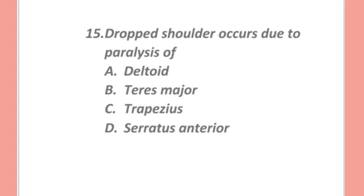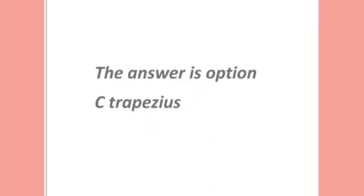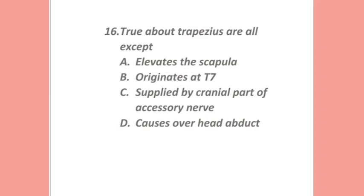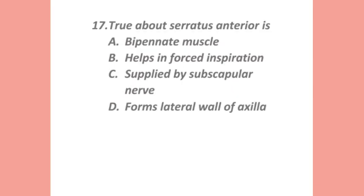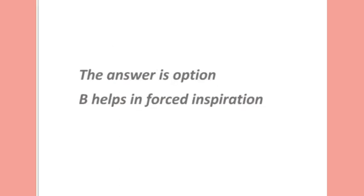The muscle causing supination of the forearm is: anconeus, brachioradialis, biceps, or FDS? The answer is option C — biceps. Dropped shoulder occurs due to paralysis of: deltoid, teres major, trapezius, or serratus anterior? The answer is option C — trapezius. True about trapezius — all except: elevates the scapula, originates at T7, supplied by cranial part of accessory nerve, or causes overhead abduction? The answer is option C — supplied by cranial part of accessory nerve.